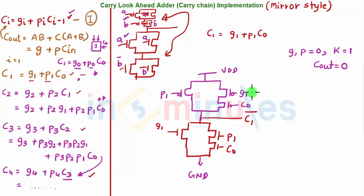p is 0, g is 0, so this is off, this is off, no path for pull-down. This is on, it will pull the output towards vdd. So it does not matter what this c0 is. So my c1 bar